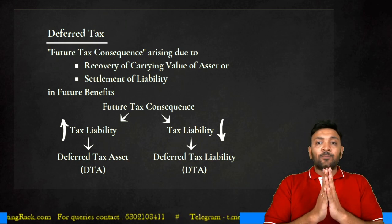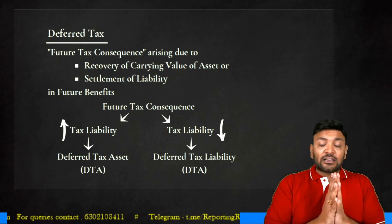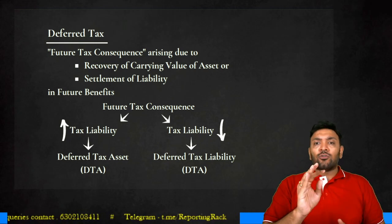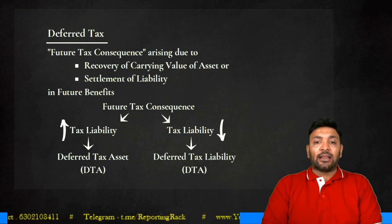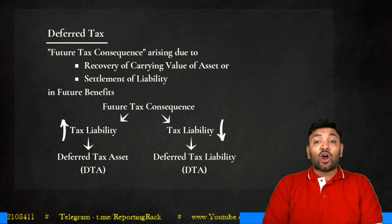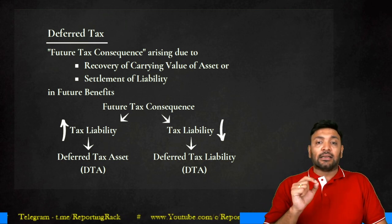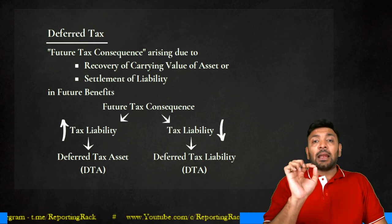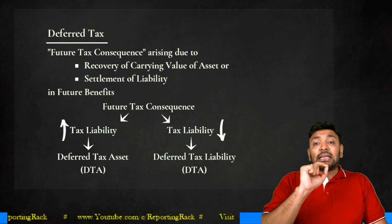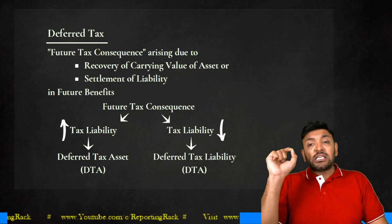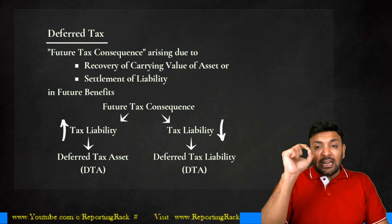What is deferred tax? Deferred tax is a future tax consequence. For example, let's say there is a provision for bonus to employees. If the payment of bonus is not made within the current reporting period before the due date of filing returns under Section 139(1), then such provision for bonus is not allowed as a deduction. But it can give rise to a future deduction when the bonus is actually paid, meaning my future tax payable will reduce. This is called a future tax consequence.